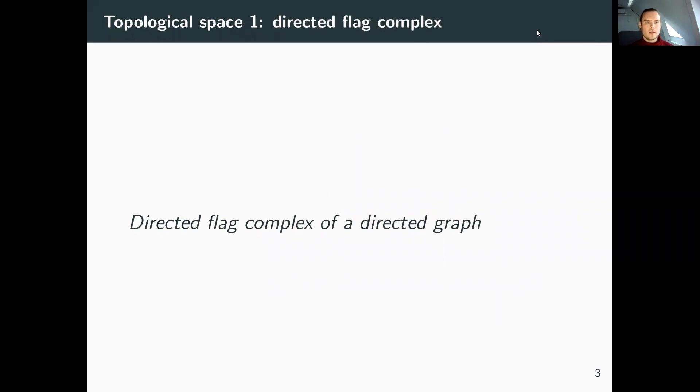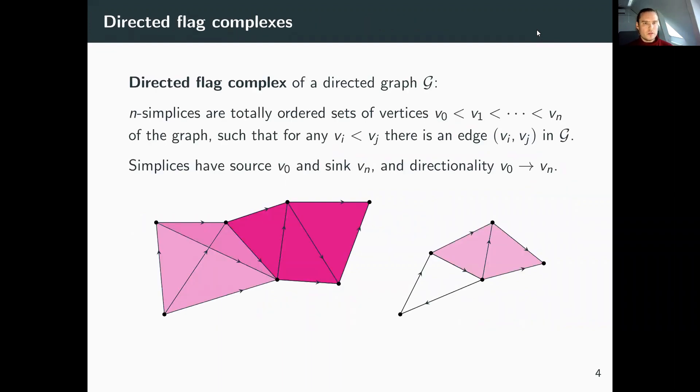The first construction is the directed flag complex of a directed graph. The n-simplices are totally ordered sets of vertices from the graph such that if I take any ordered pair from the sequence of vertices, that ordered pair corresponds to an actual directed edge in the graph.